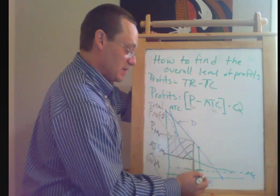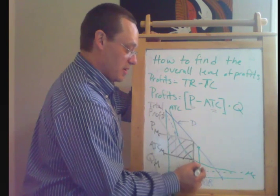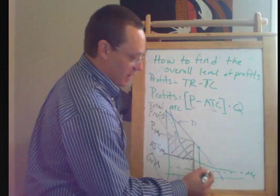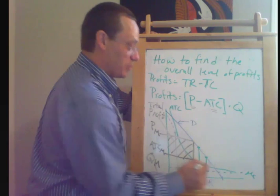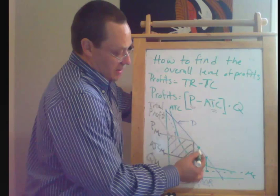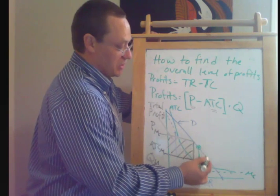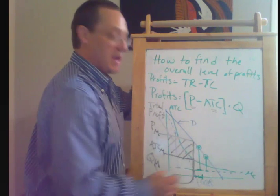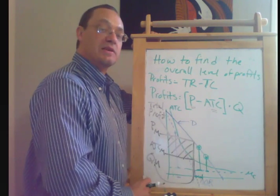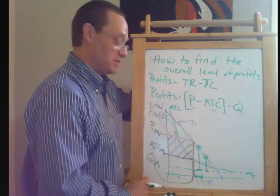So producing this unit of Q out here would have generated gains from trade. And likewise out here. Now the monopolist doesn't produce those units because the monopolist, if it has to charge a uniform price, would make negative marginal revenue on those sales because it would end up cutting the price on all of its previous units and it would lose money.